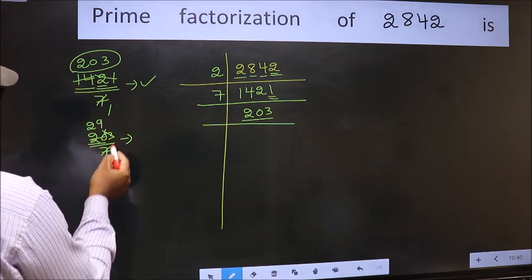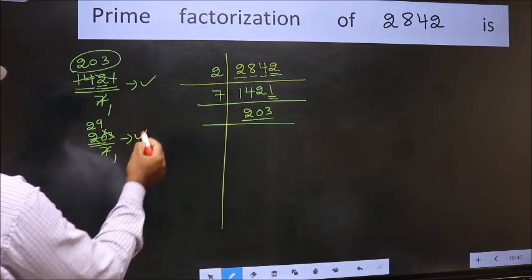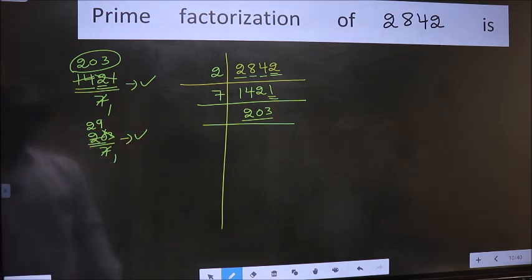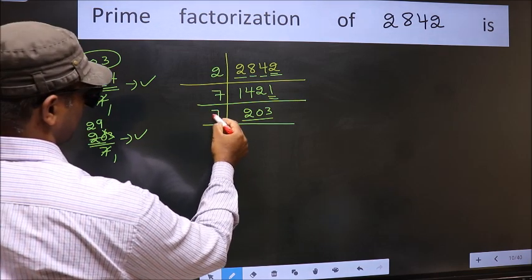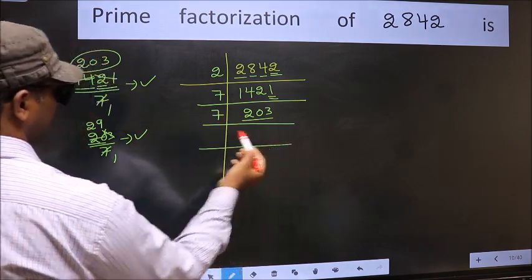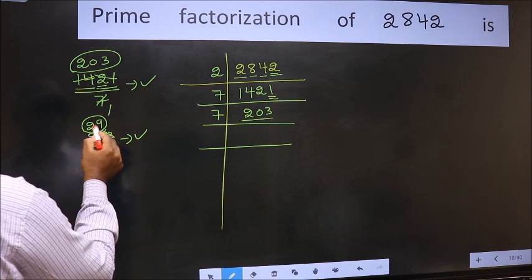When do we get 63 in 7 table? 7×9=63. No number has been left out, so this is divisible by 7. So 7 here, and here we should write this number 29.